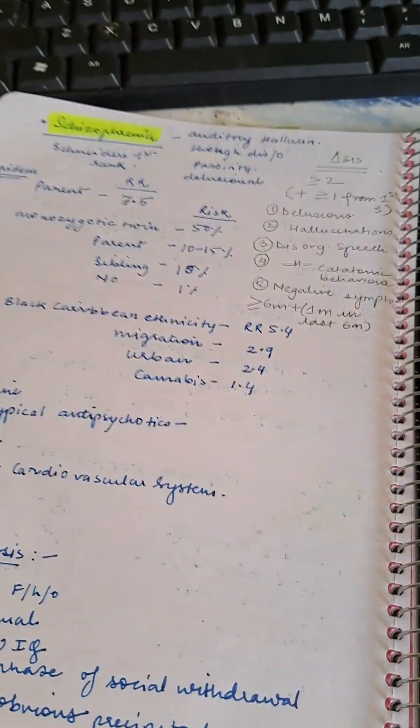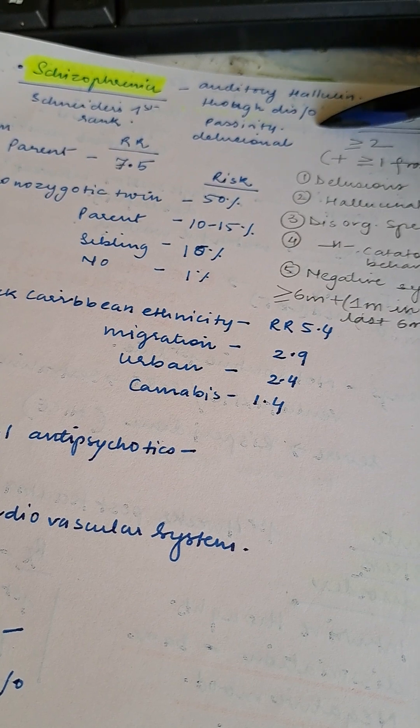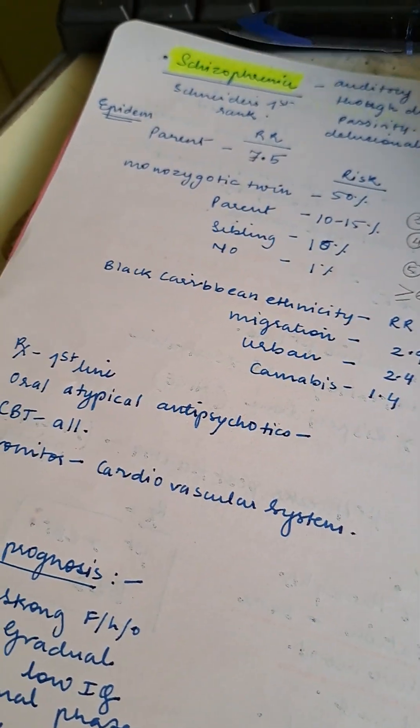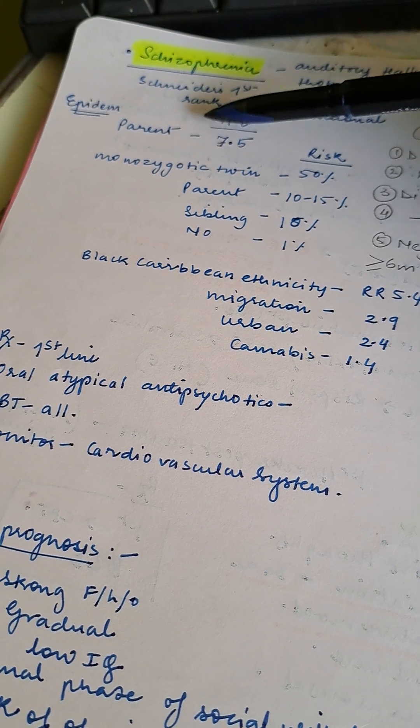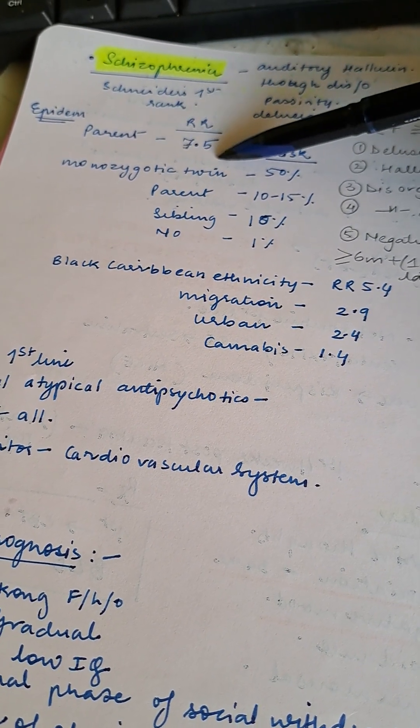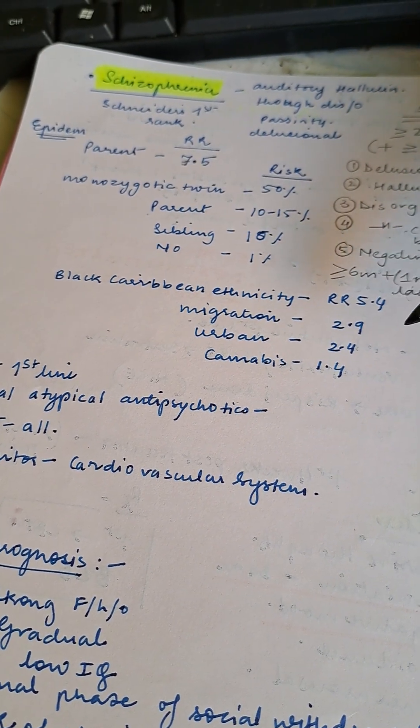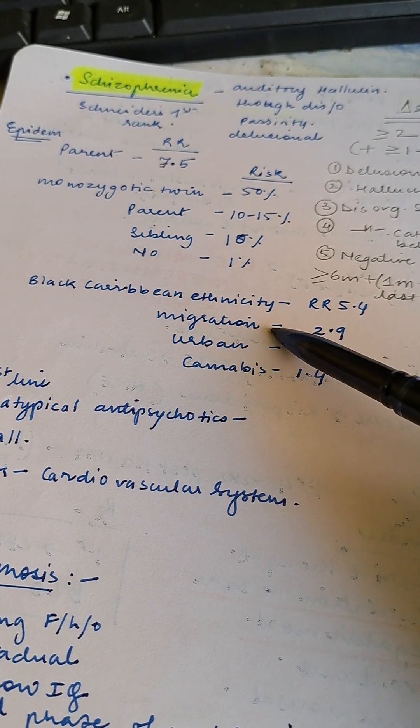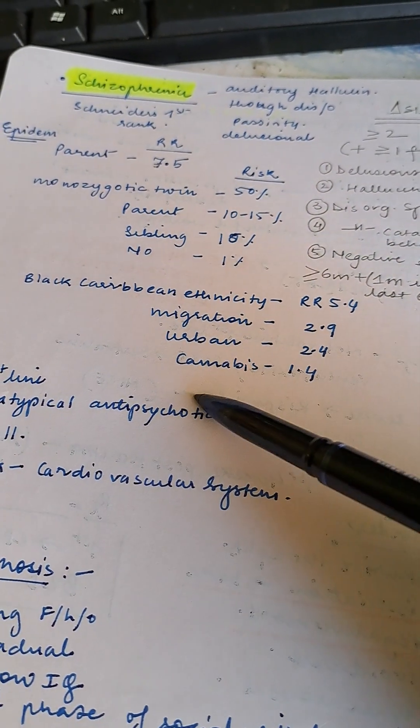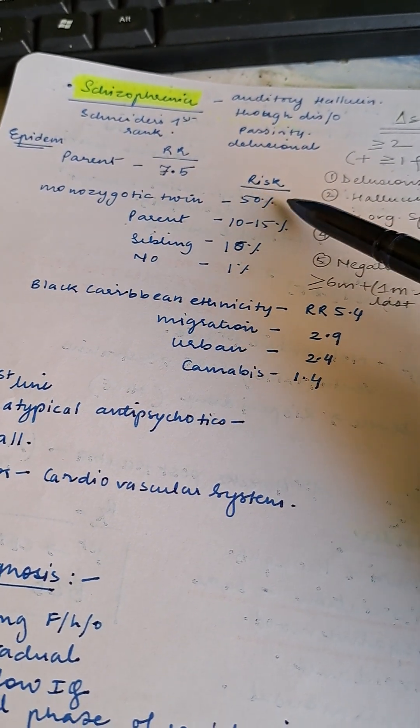Schizophrenia. As per Schneider's first-rank symptoms: auditory hallucination, thought disorder, passivity, and delusion. Epidemiology is important. If a parent is affected, relative risk is 7.4. Black Caribbean ethnicity has relative risk of 5.4. Migration 2.9, urban living 2.4, cannabis 1.4.